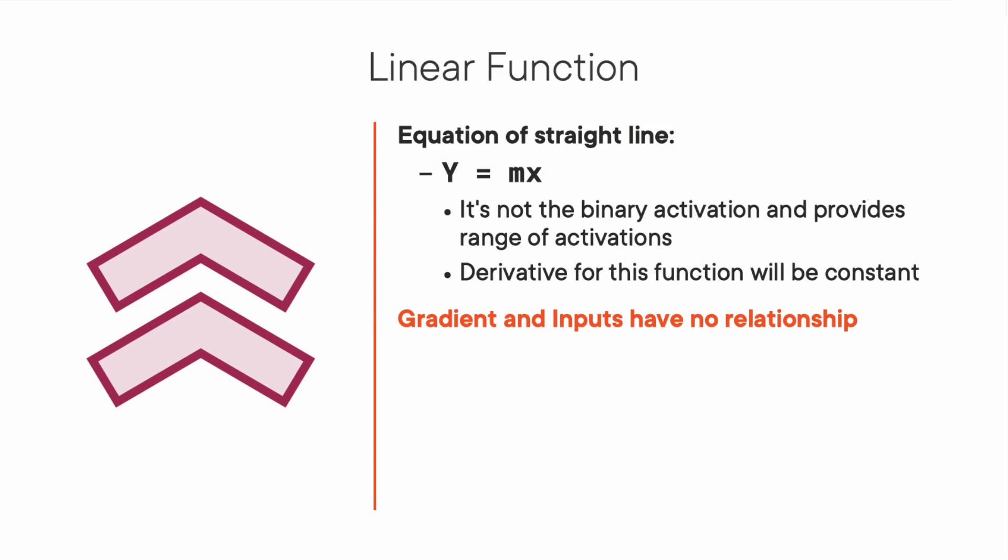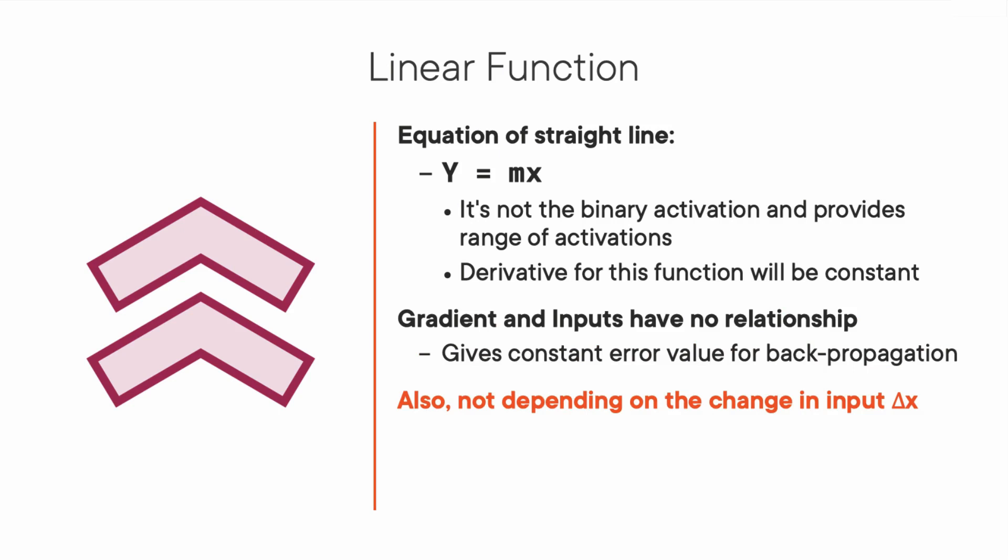In this equation, the derivative with respect to X is M. That means the gradient has no relationship with inputs. If there is an error in the prediction, the changes made by backpropagation are constant and not depending on the change in the input, which is delta X. That's a serious problem.